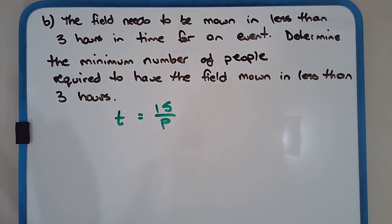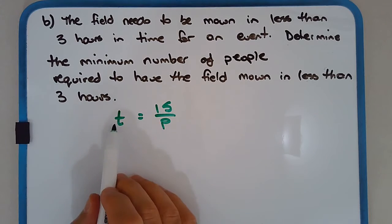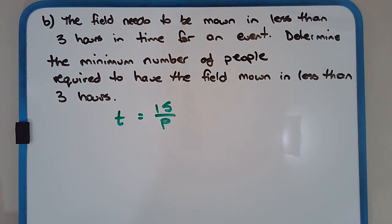So let's say we had T is equal to 15 over P. We're trying to find this P, the number of people. Now, a bit of a hint. P has got to be a whole number. We're not talking about 1.8 people here. It's a whole number of people. Now, we know that T really, we need it to be three hours or less than three hours, in fact.